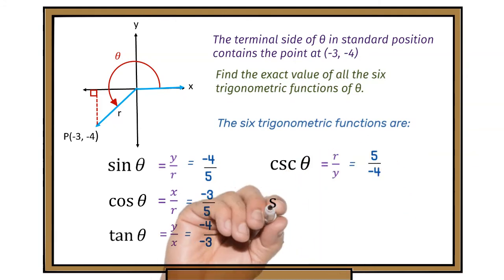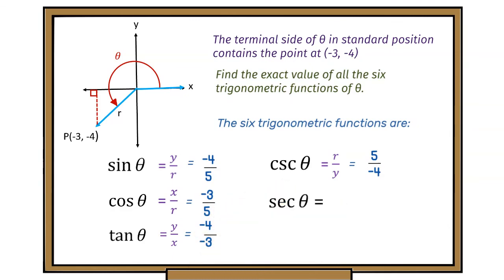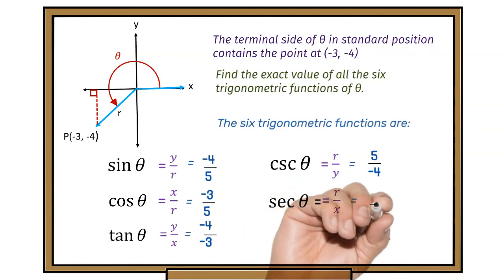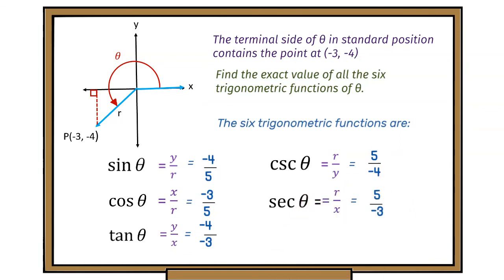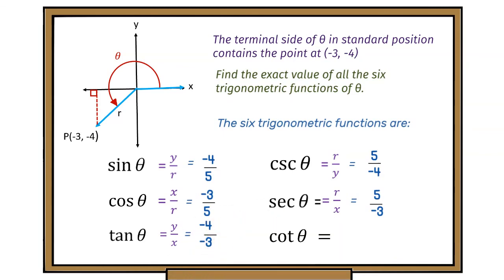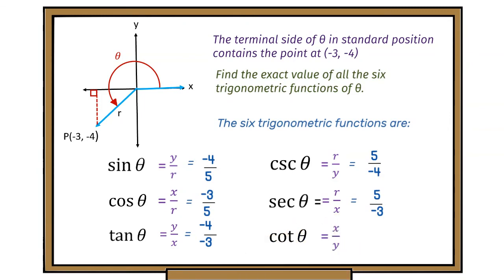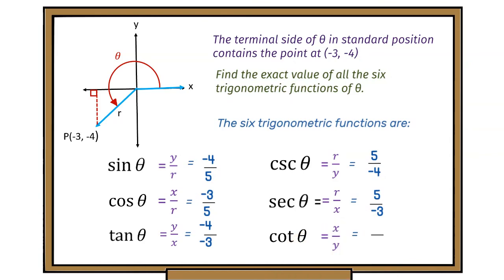Secant of theta is r over x, which is 5 over −3. Cotangent of theta is x over y, which is −3 over −4. These values can be put into your calculator and simplified further.